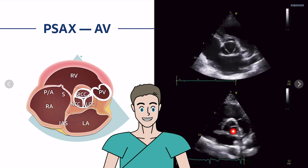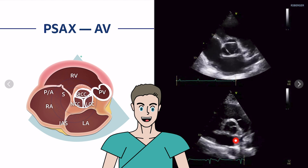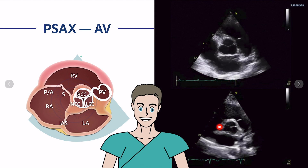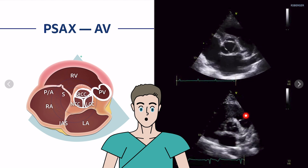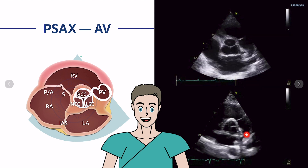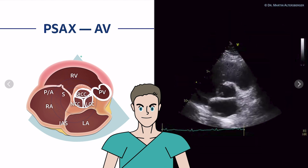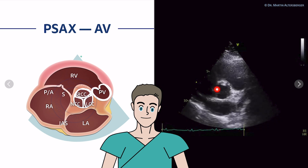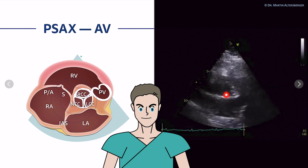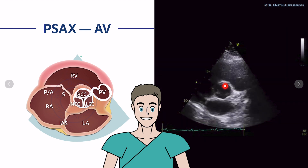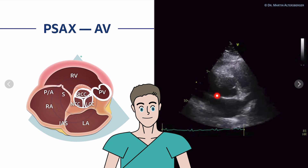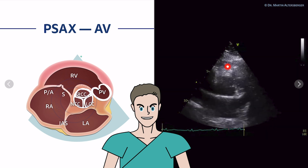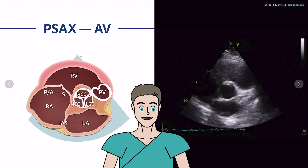In this view, we have the same anatomical findings: the right coronary cusp, the left, and the non-coronary cusp. When image quality is not optimal, you can often still differentiate a tricuspid aortic valve, seen as a Mercedes star pattern — this is the right, the left, and the non-coronary cusp. Also visible here are the left atrium, right atrium, RVOT, and the left atrial appendage.